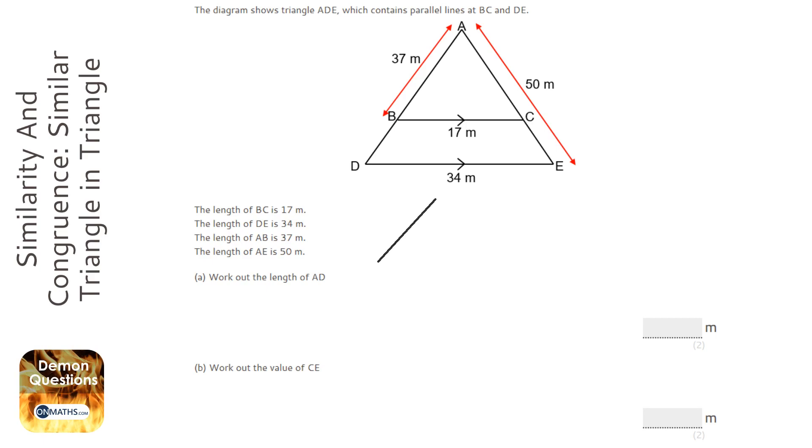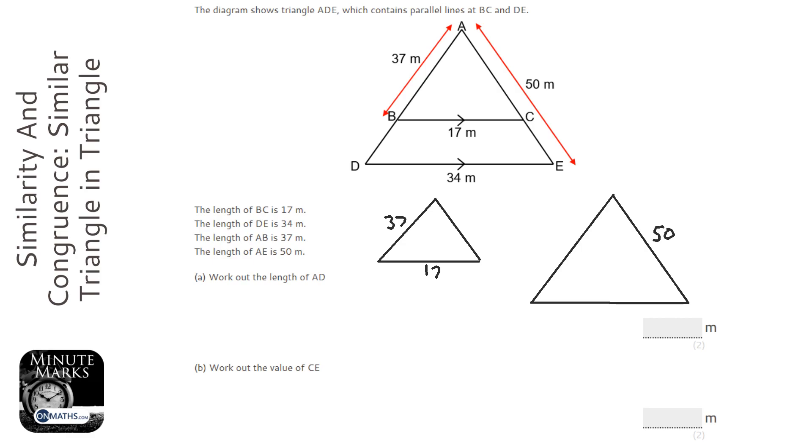So I'm going to do that really quickly. I'm going to draw the small one and I'm going to draw the big one. There we go. And I'm going to fill in the length. This small one has 37 here and 17 at the bottom here. This big one has 50 down the side and 34 at the bottom.